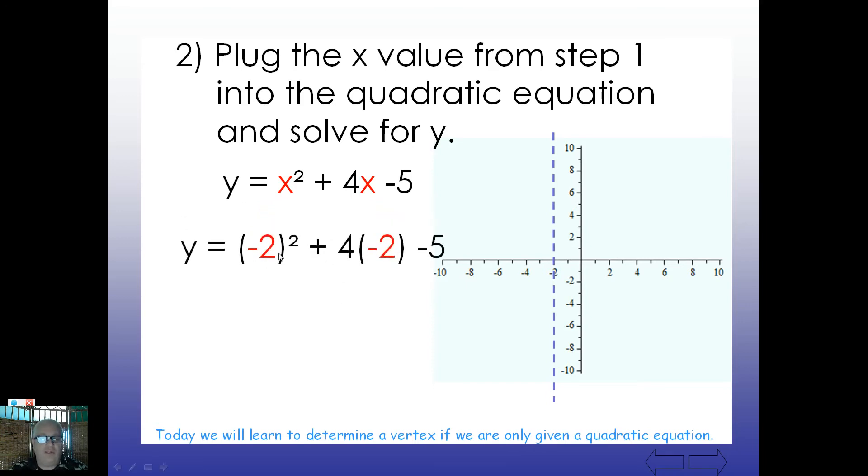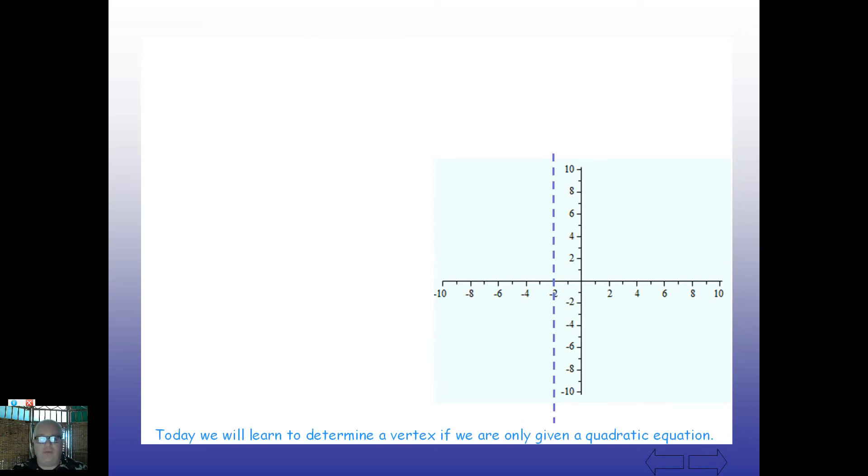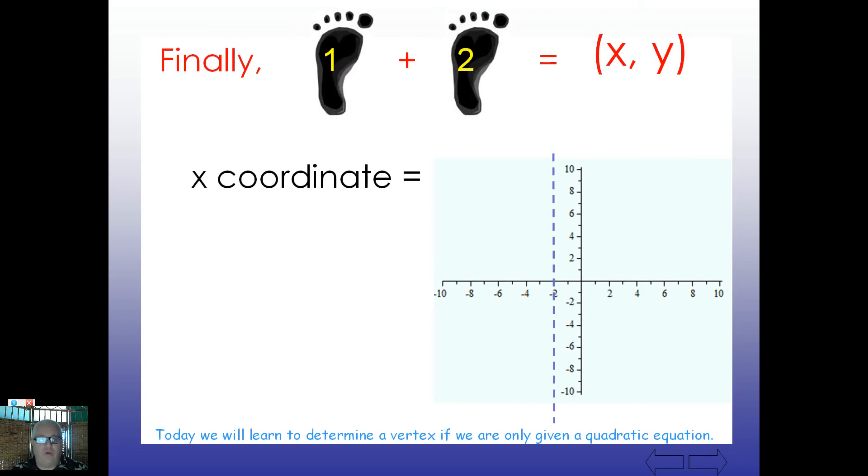So, order of operations, negative 2 squared plus 4 times negative 2 minus 5. What is negative 2 squared? Well, it happens to be 4. 4 times negative 2, negative 8 minus 5. And we look at putting all that together, we get negative 9. So, now we've got two things. We've got a negative 2 and a negative 9.